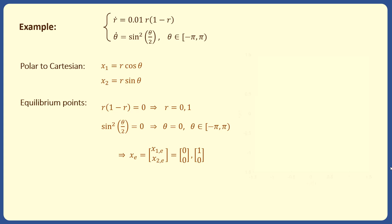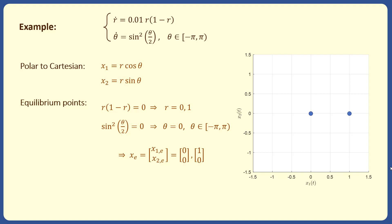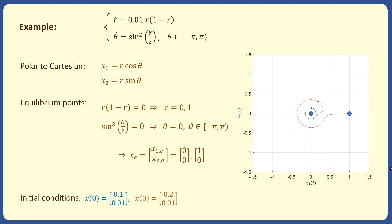We use MATLAB to plot some solutions of the system. When the system starts from the equilibrium points, the solutions remain at those points. Setting the initial condition to (0.1, 0.01), we see that the solution, which starts close to the origin, tends toward the equilibrium at x₁ = 1. Trying another initial condition, x(0) = (0.2, 0.01), the solution again converges to the equilibrium at x₁ = 1, not to the origin.